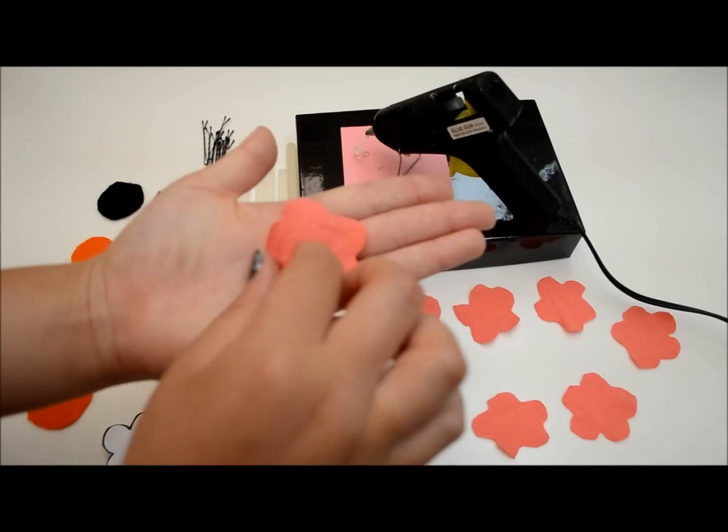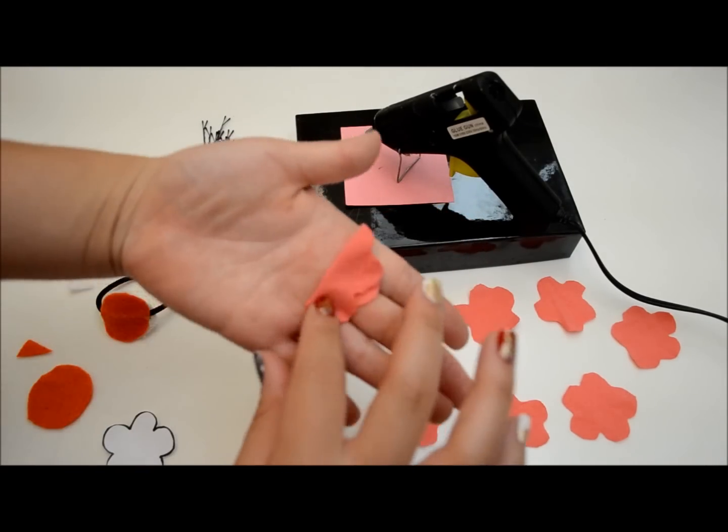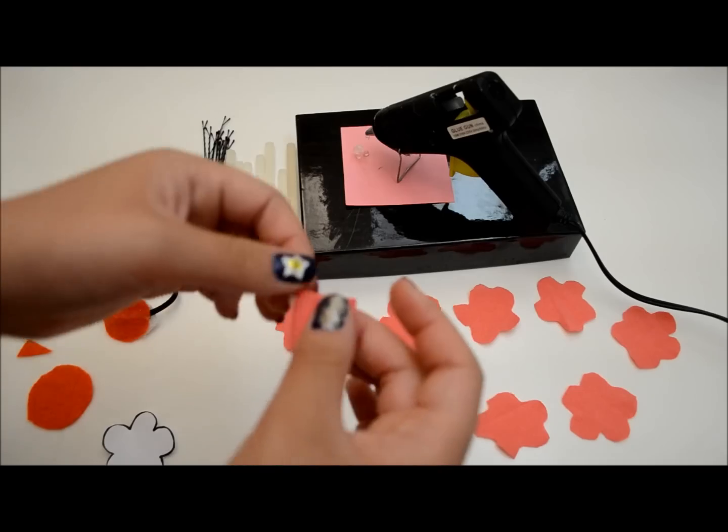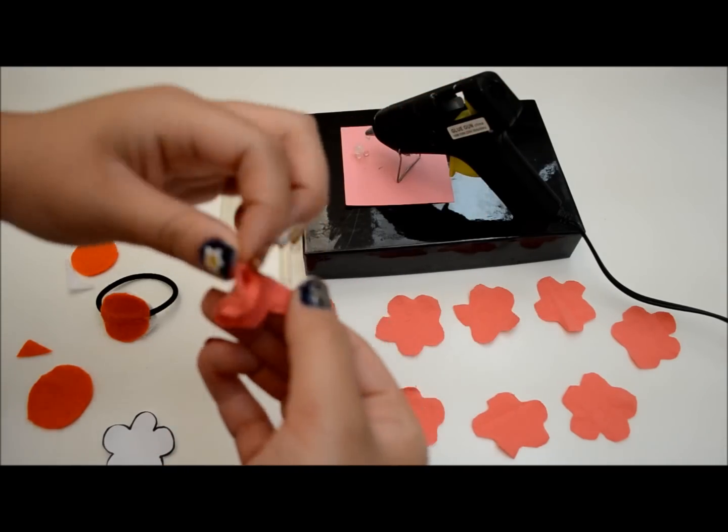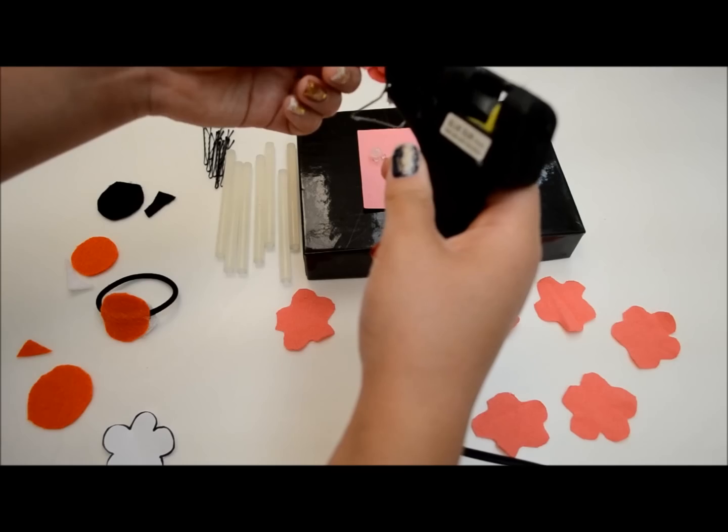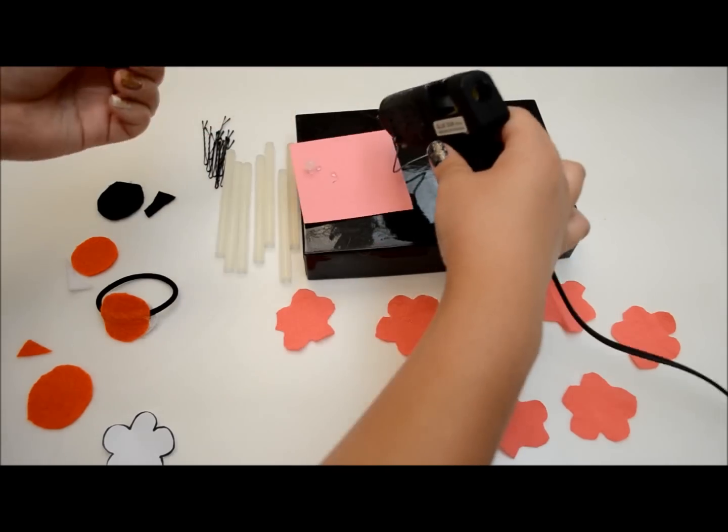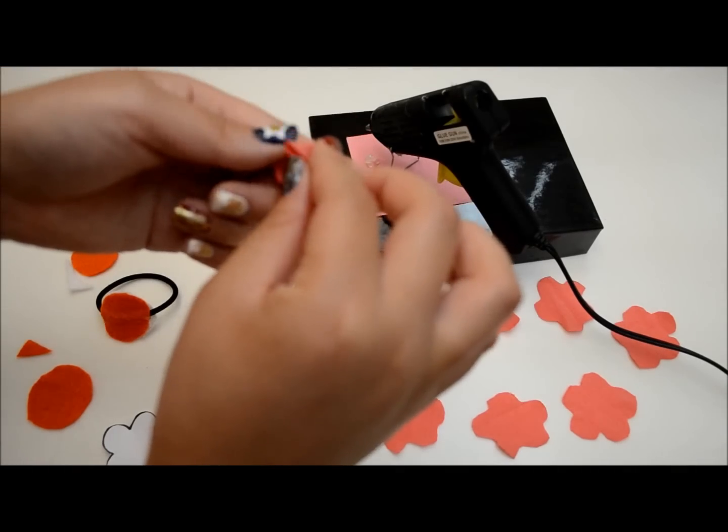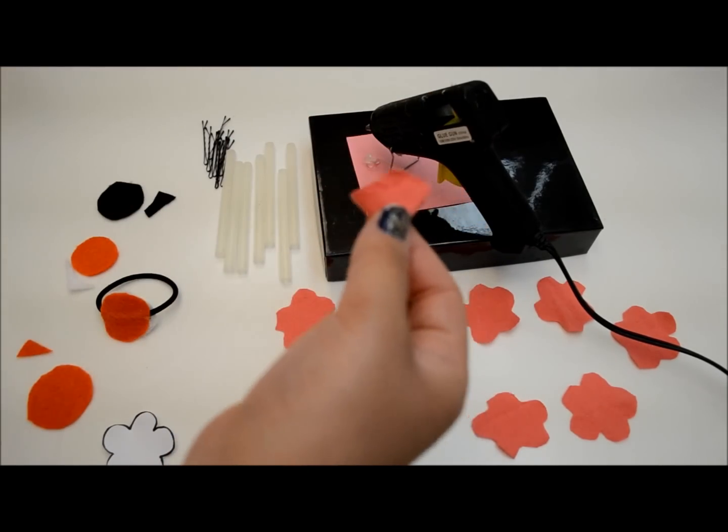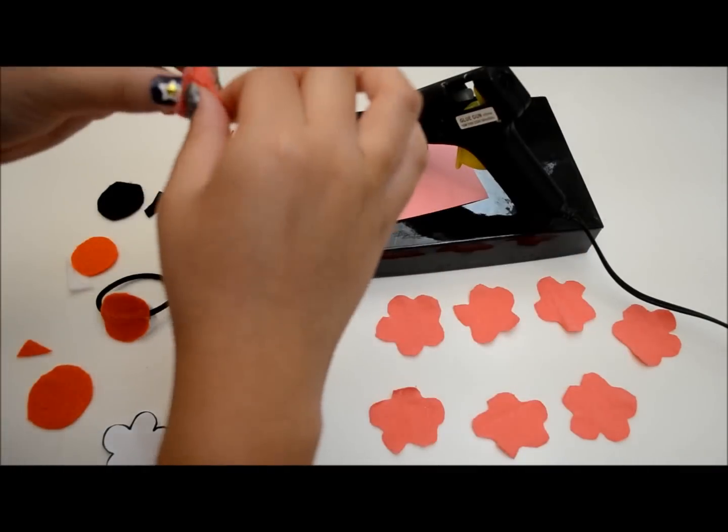For 8 out of the 9 flowers, fold them in half and then place a small dot of glue in the center before folding it in half again. There will be 2 layers, so each petal forms 1 quarter of each layer.